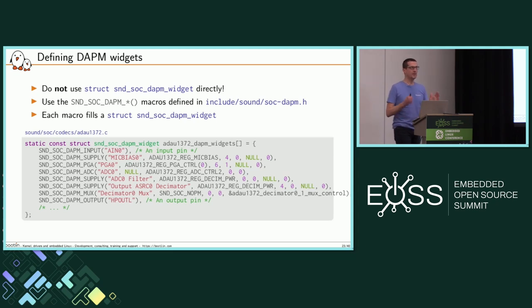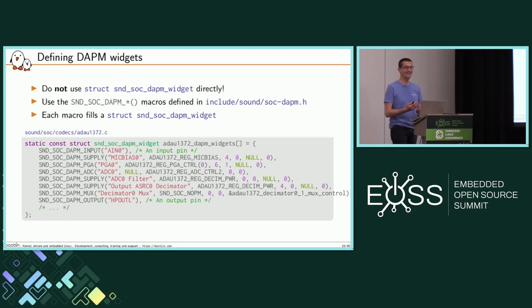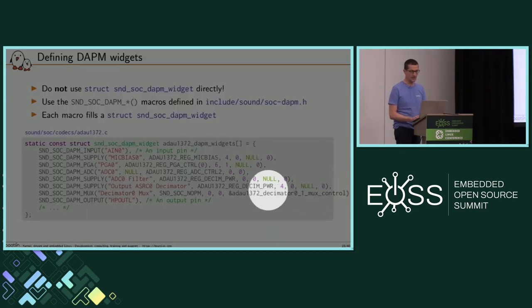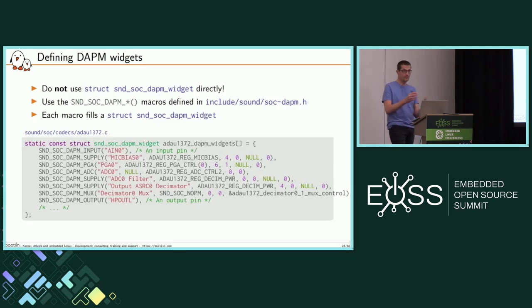However, now that you know about the structures, never use them directly because it's pretty complicated to fill all the fields correctly. There are many macros in the soc/dapm.h include file that you can use to fill the structure for each type of widget. There are a few examples: the first is an input widget — just an input pin. The second is a supply with a name, a register, an offset, and so on, so DAPM will know which bit to set in which register. There is also a mux, which has a key control associated to it, which is where you can actually control the path you want to assign.